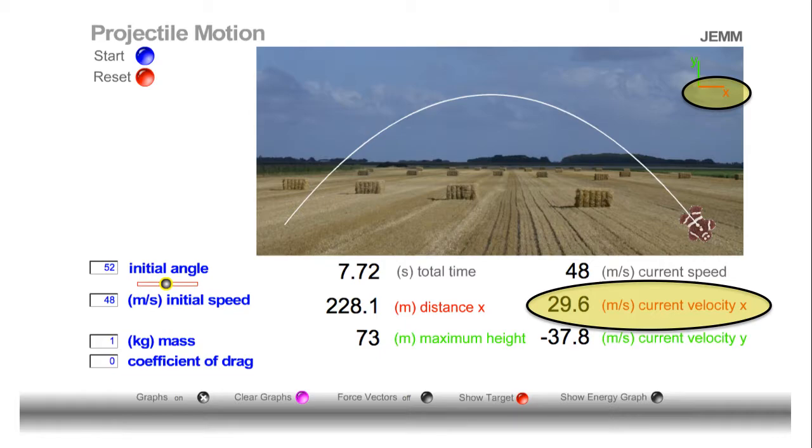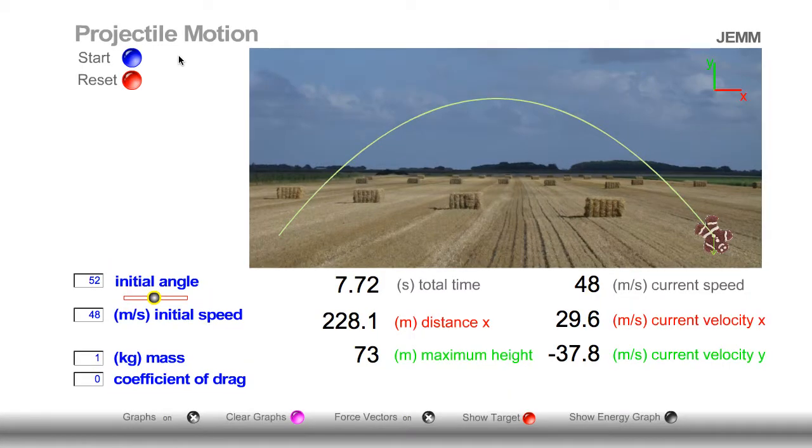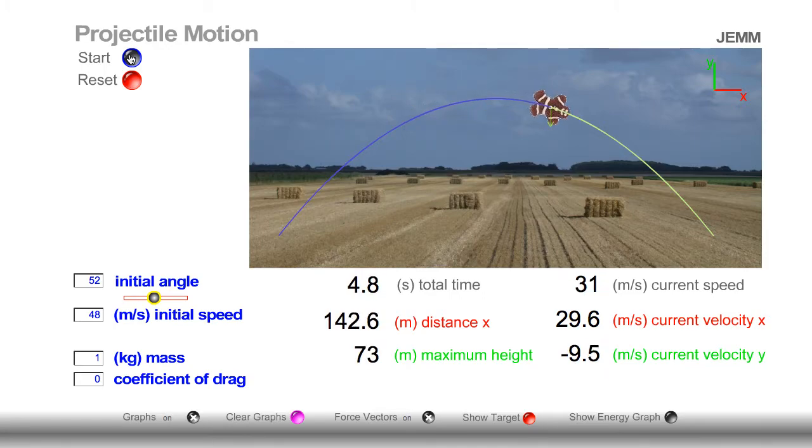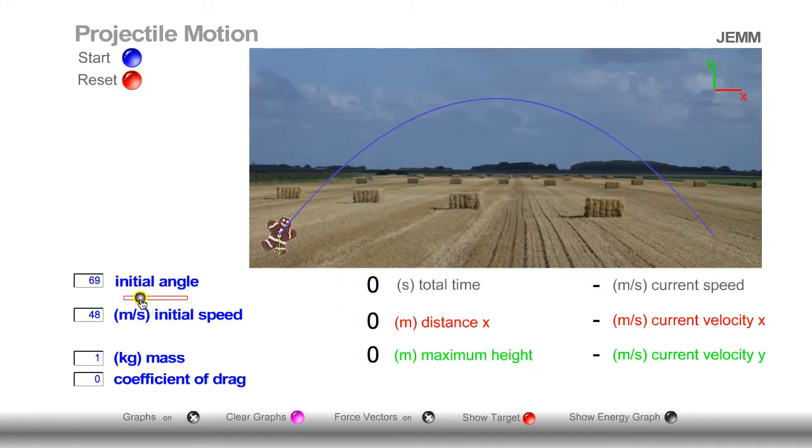And now I really want you to pay attention to that specific number, and only that specific number when we launch the projectile again. So we won't change any parameters, and I just want you to focus on current velocity in the X direction. Notice that the current velocity in the X direction does not change throughout the journey. Let's change the angle and see if that holds true.